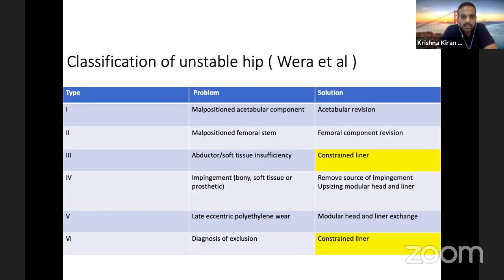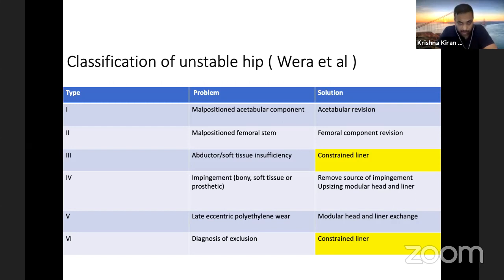The classification of the unstable hip: Type 1 is a malpositioned acetabular component. Type 2 is a malpositioned femoral component, or a combination of both. Type 3 is abductor or soft tissue insufficiency. Type 4 is impingement — bony, soft tissue, prosthetic, or combined. Type 5 is late eccentric polyethylene wear. Type 6 is diagnosis of exclusion. These classifications are important to understand pre-operatively in order to make an appropriate plan for managing these patients.